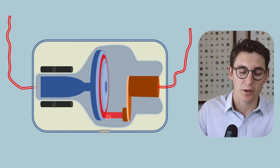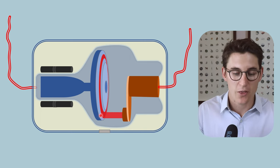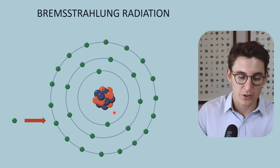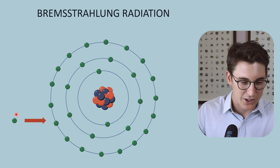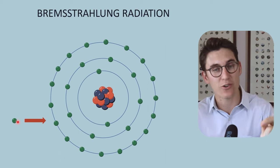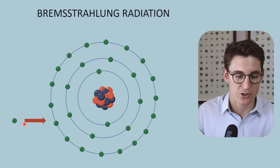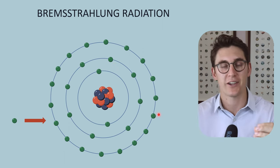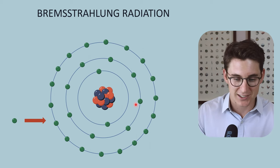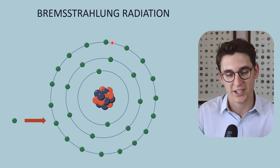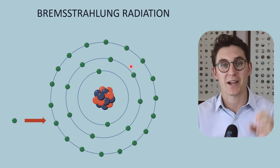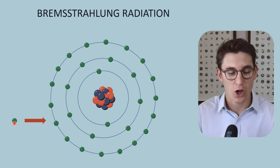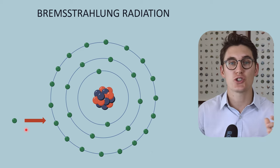Of that less than 1% that is converted into x-rays, the majority will be Bremsstrahlung radiation. If we look at our Rutherford-Bohr model of the atom, and we have an electron that has come from our cathode being accelerated towards our anode via our tube potential, it is going to strike our target material. This atom represents the target material of our anode, which is most commonly tungsten. This isn't technically a tungsten atom — there aren't 74 protons and 74 electrons here — but it's a diagrammatic representation of tungsten.